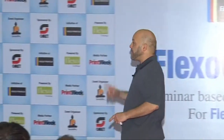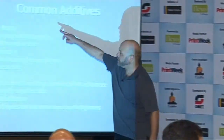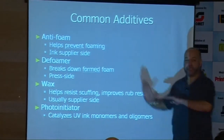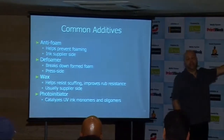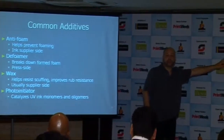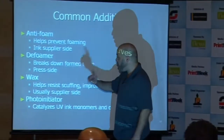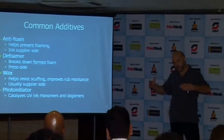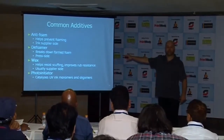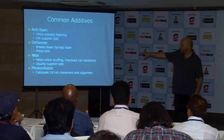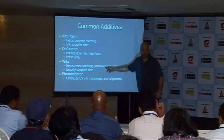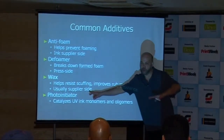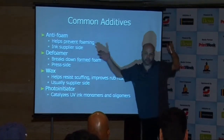Anti-foam is a little bit different from defoamer: anti-foam helps to prevent foaming and tends to be done on the ink supplier side, whether at the ink company's factory or in a special laboratory in your facility. Defoamer breaks down foam that is already formed — similar but different — and tends to be done press-side by the operator. Wax helps resist scuffing and improves rub resistance; that's usually supplier-side. You do not want operators adding wax to the ink.